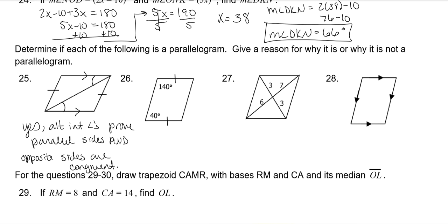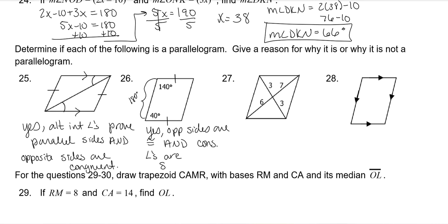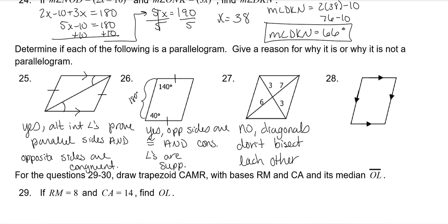The next one has 140 and 40, so both together is 180 degrees. This one is a yes because opposite sides are congruent and consecutive angles are supplementary. The following one is a no—if the segment had been seven it would be yes, but it's not, so no because the diagonals don't bisect each other. And the last one is yes because opposite sides are parallel.